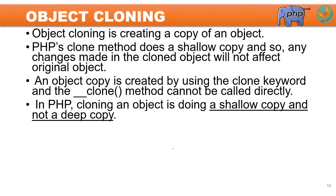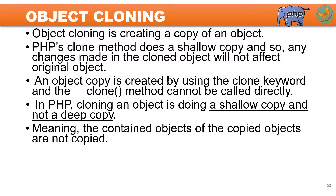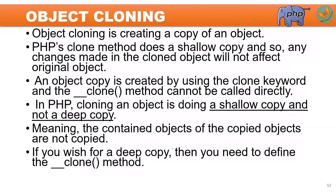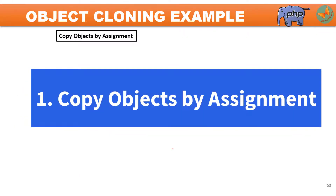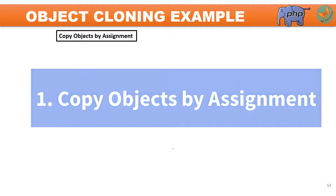In PHP, cloning an object is a shallow copy by default, and you have to take some extra steps to implement a deep copy. Deep copy means that the contained objects within the copied object are not copied automatically. If you wish for a deep copy, you have to implement the PHP magic function __clone method. We will go through three examples showing object cloning, the drawbacks of each method, and how the deep copy method solves all issues.